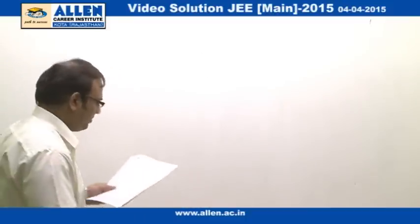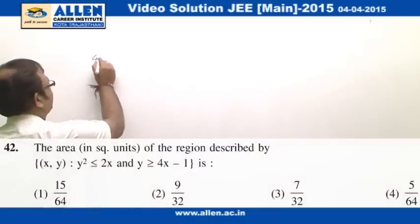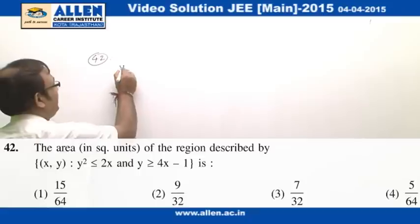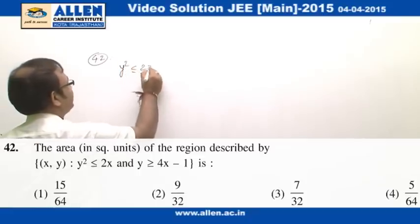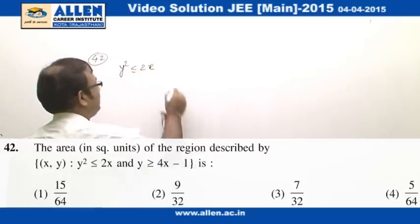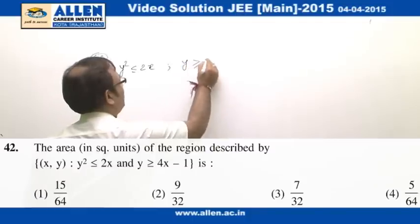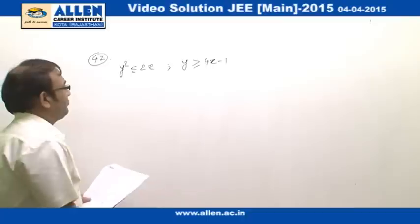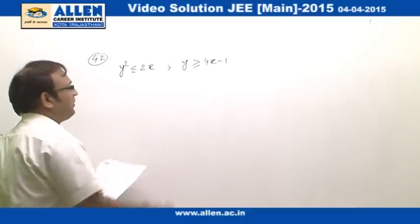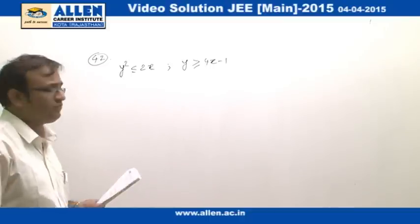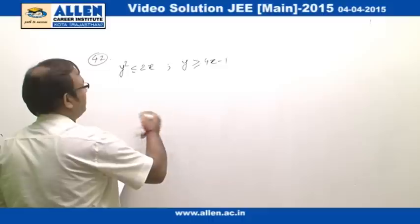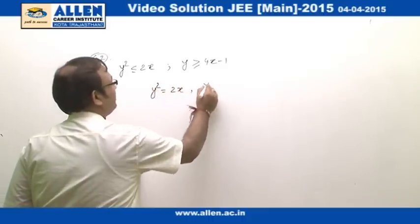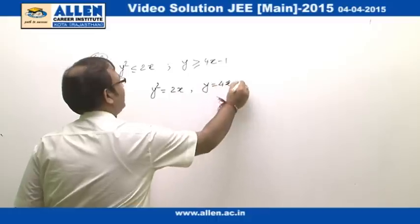In question number 42, it is an area question in which there are two inequalities given. One inequality is y²≤4x−1 and the other involves the parabola y²=2x and the line y=4x−1. We will first find the points of intersection of the two curves.